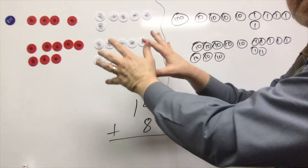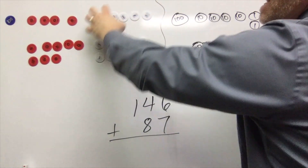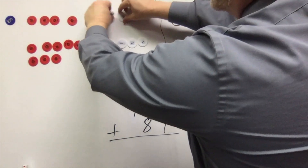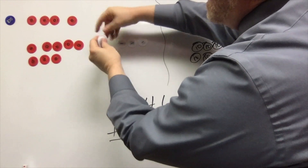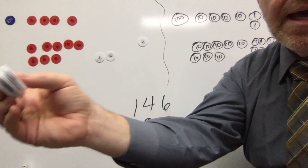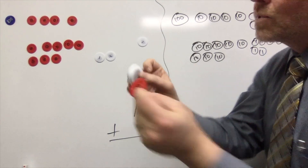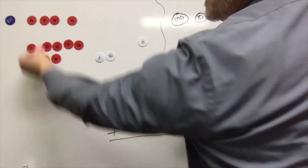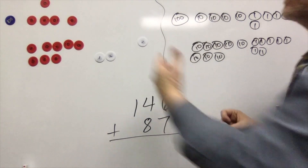So let's start with the concrete. We know that we can take 10 ones and cash them in for one ten. So one, two, three, four, five, six, seven, eight, nine, ten. We can cash in these 10 ones for one ten. So I'm going to take these 10 ones, take them away, and exchange them for a brand new ten.